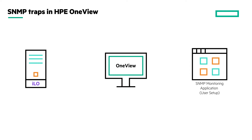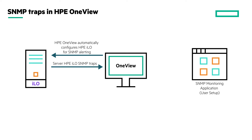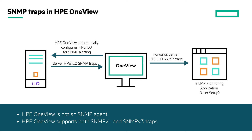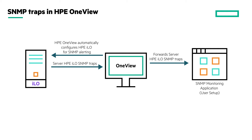Now let's understand how SNMP traps are handled by HPE OneView. It automatically configures HPE iLO for alerting. It receives SNMP traps from HPE iLO and forwards them to the SNMP monitoring application you have configured. It is not an SNMP agent. HPE OneView supports forwarding both SNMP V1 and SNMP V3 traps, but it uses only SNMP V3 to receive traps. If you set the SNMP V1 protocol to forward traps, it converts the received SNMP V3 traps to SNMP V1 traps, effectively downgrading the security, and then forwards the traps to your SNMP monitoring application.